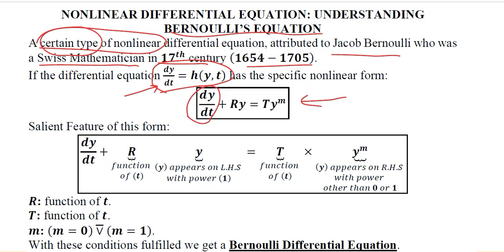There is dy/dt — the usual derivative part — and then the y variable with coefficient r. However, there is another unusual term: y appears again with a certain power m, and it has a coefficient T. Let's unravel these coefficients r and T and understand the power m.